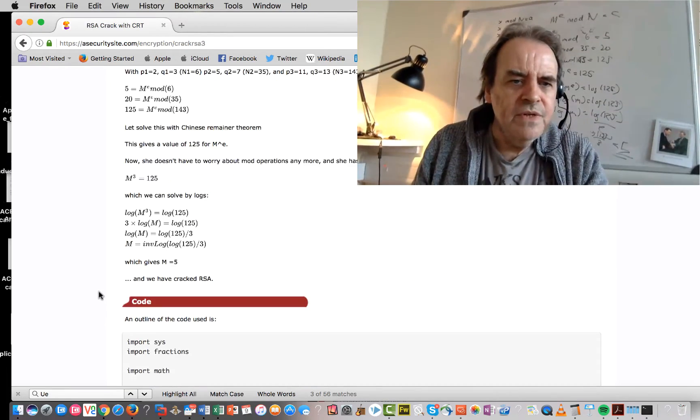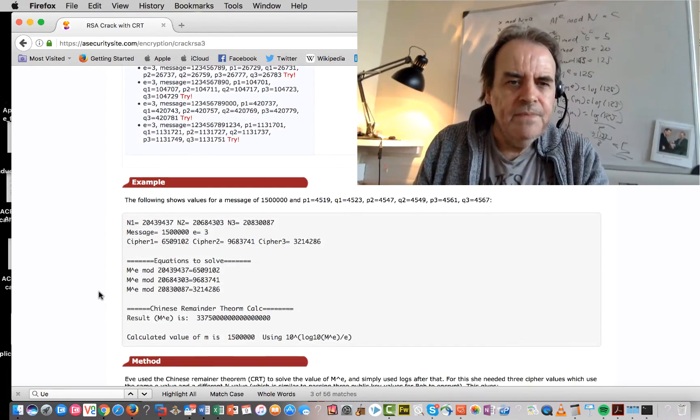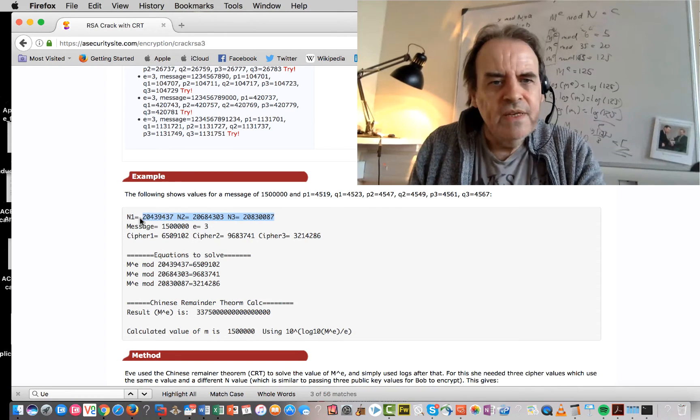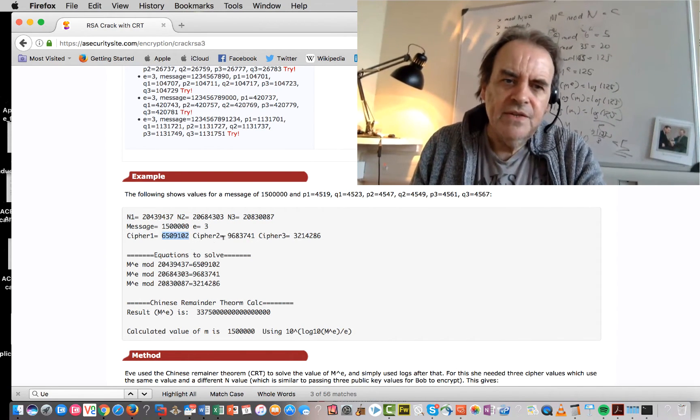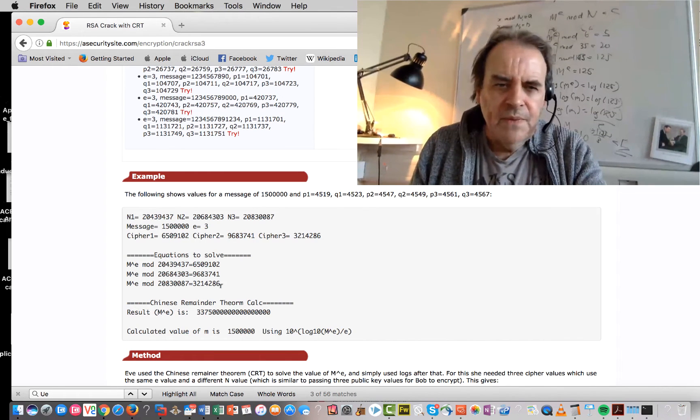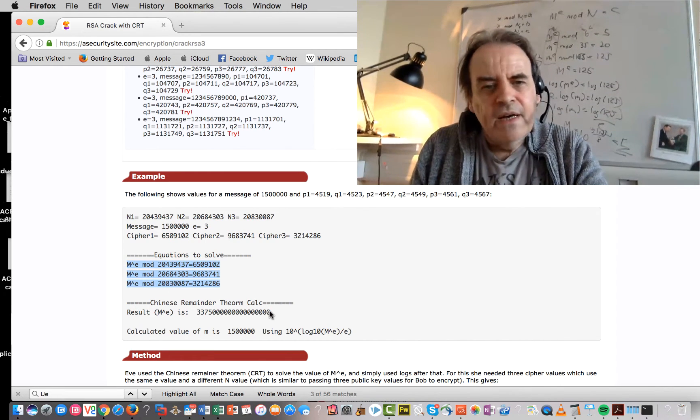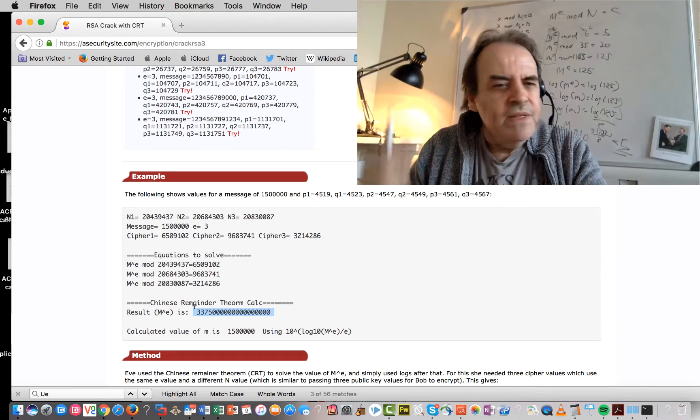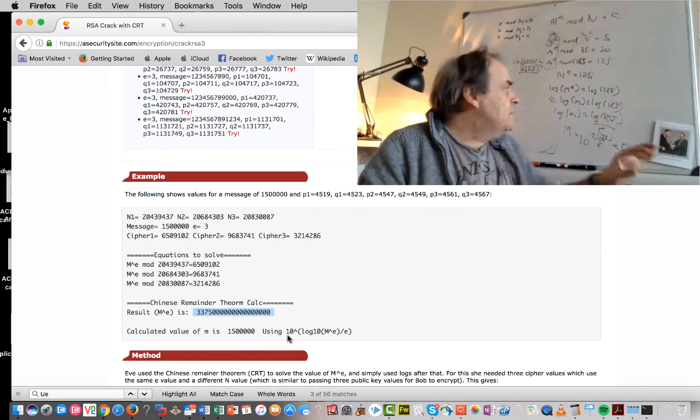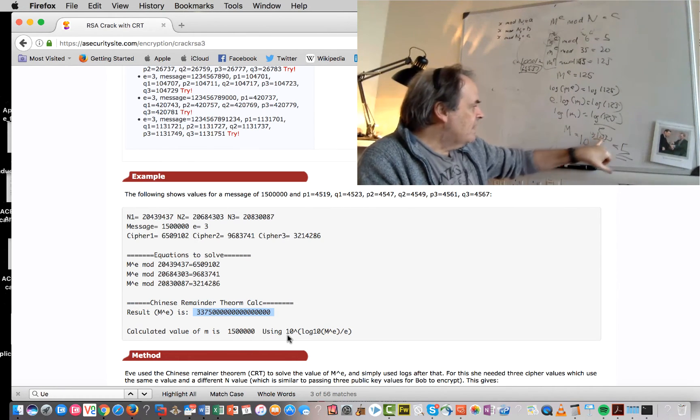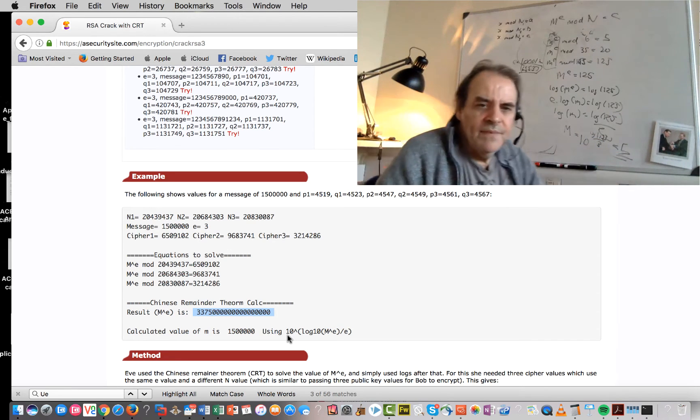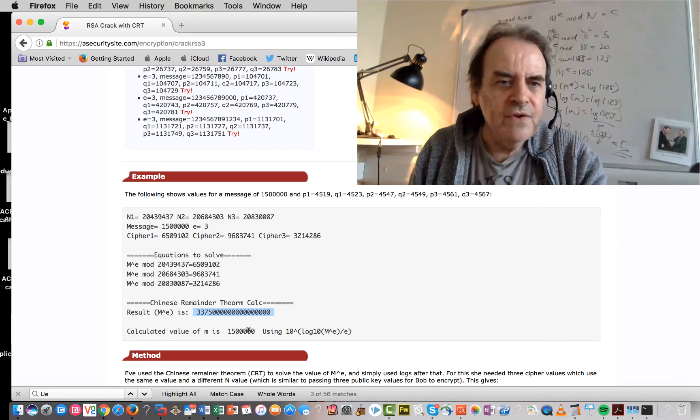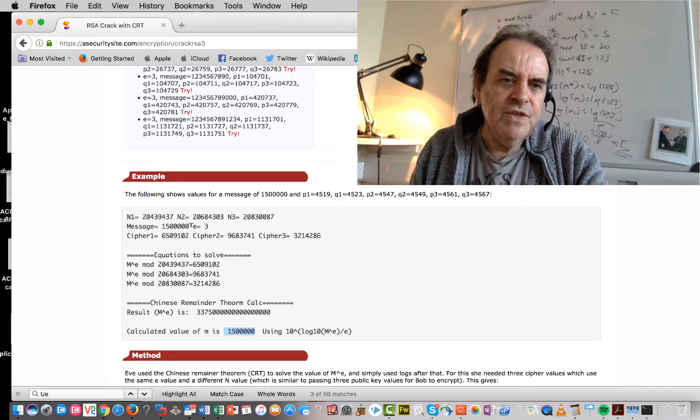If we look at a more detailed example here, so there's three N values there. There's the message and the encryption. And these are the ciphers. We lay them out like this. And then we can use Chinese remainder theorem to calculate this value. If we do log of that value divided by the encryption key, raise it to the power of 10, then we can actually find out the original value, which is this one, which should be the same as that one.